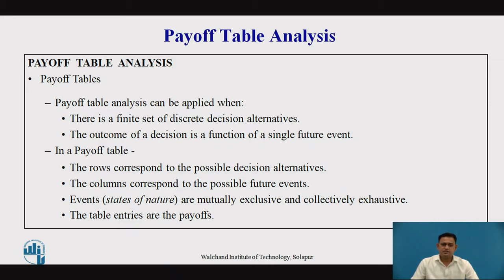Before that, let's see what is the payoff table. The payoff table is a table which shows the sets of decision alternatives. When these alternatives are compared with, or used to get outcomes with respect to the state of nature, the rows represent the alternatives or course of action and the columns represent the state of nature or future events. These states of nature are mutually exclusive and collectively exhaustive, and the entire table shows the outcomes.